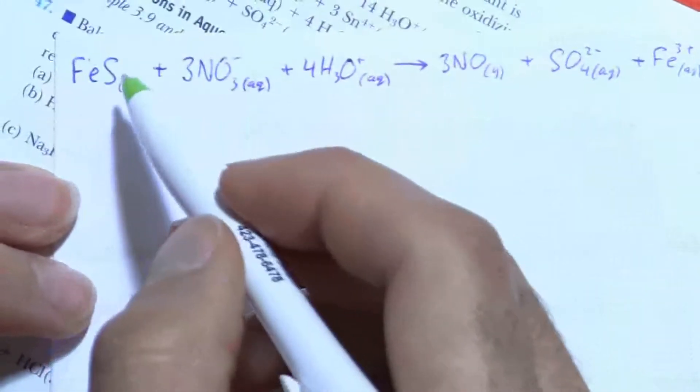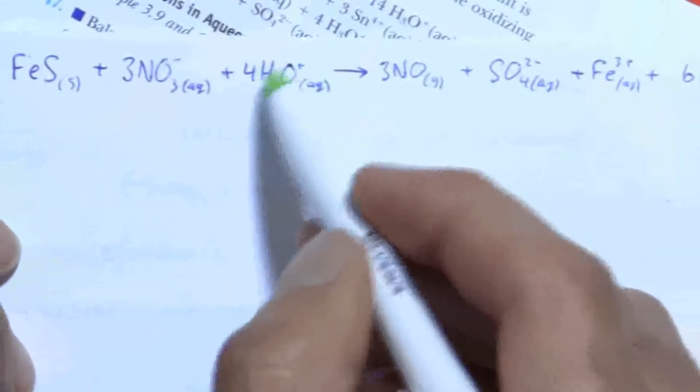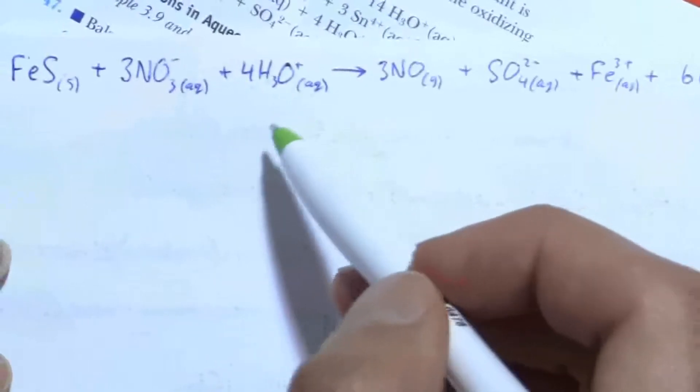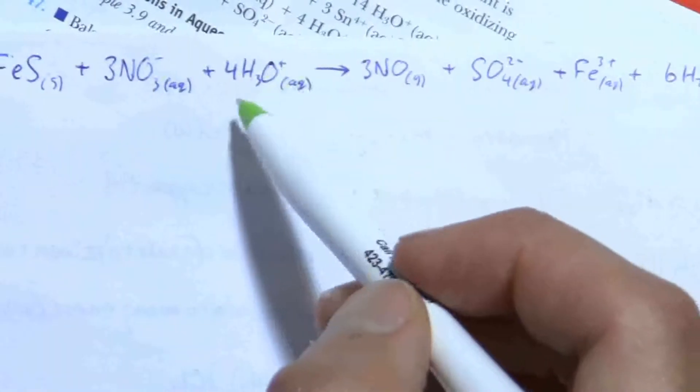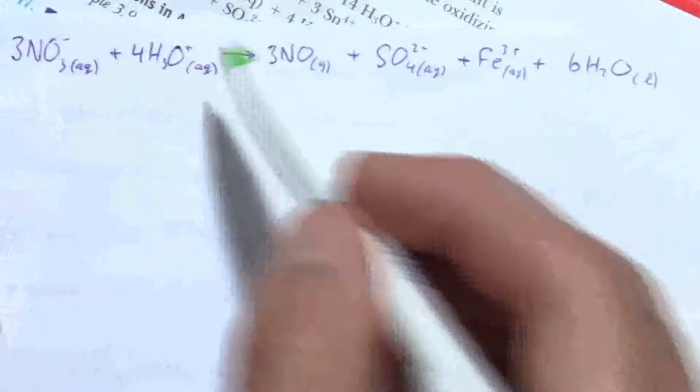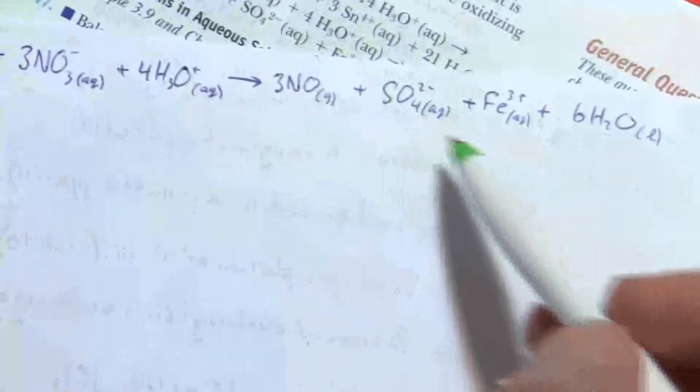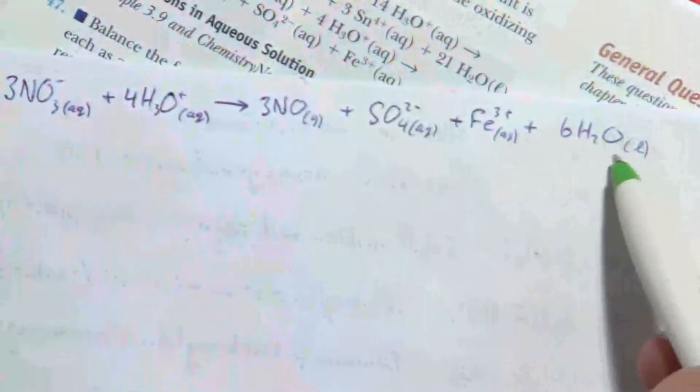Here we have iron sulfide plus nitrate ion, three nitrate ions, and some acid. Remember the hydrogen ion never exists by itself in water. It is H3O plus. So H plus and H2O is H3O plus. And then we have some nitrogen monoxide and sulfate, iron three, and water. All right, so there's our equation.